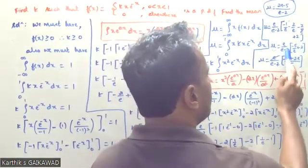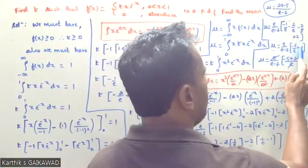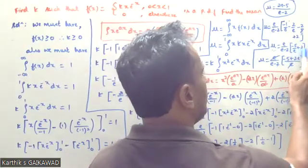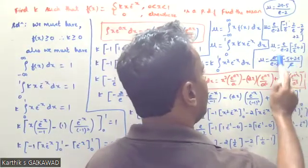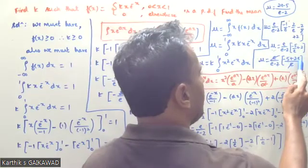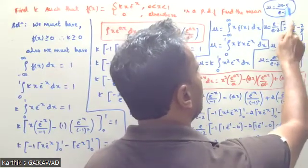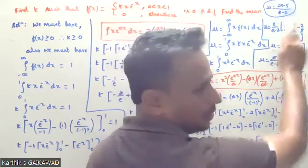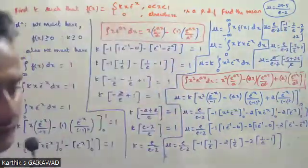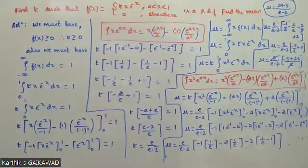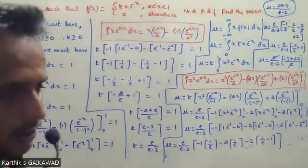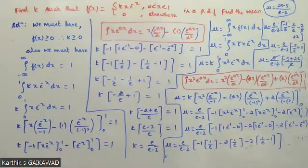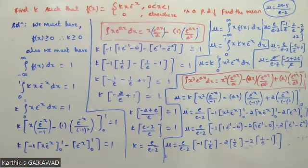Simplifying: e cancels, giving minus 5 plus 2e divided by e minus 2. So the final mean mu equals (2e minus 5)/(e minus 2). Do you have any doubts?